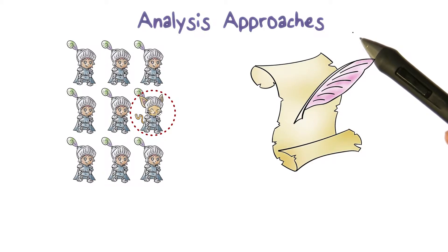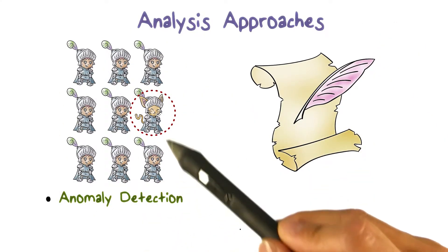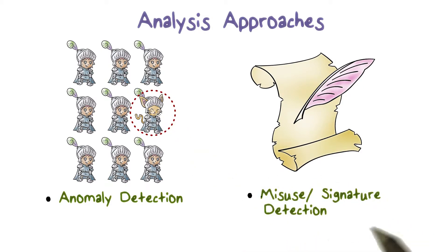An IDS typically uses these approaches to analyze data and detect intrusions: anomaly detection, which tries to detect what is not normal, and misuse or signature detection, which tries to find a match of known intrusions.